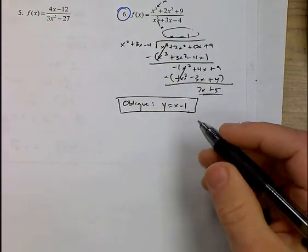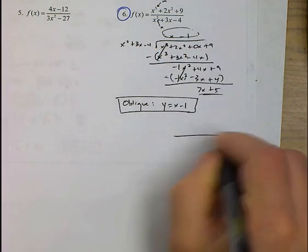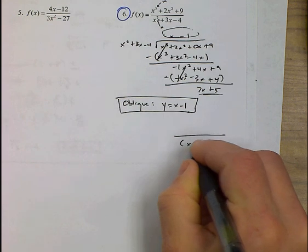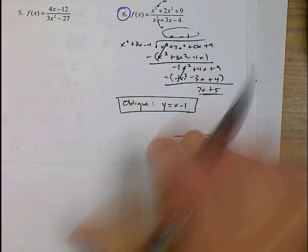To look for holes, we of course need to factor everything. The denominator is going to factor out x plus 4, x minus 1. The numerator, however, we're going to use p's and q's on. So when I come over here,